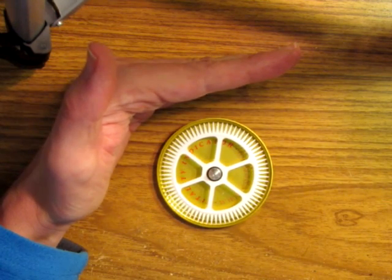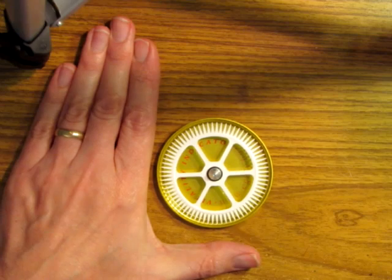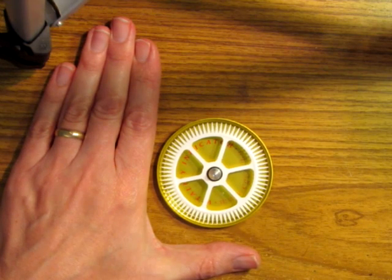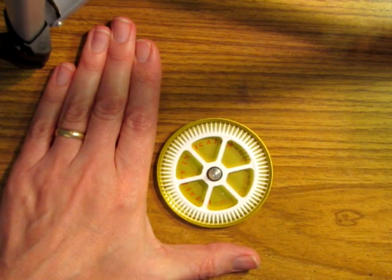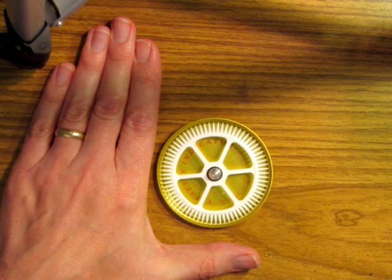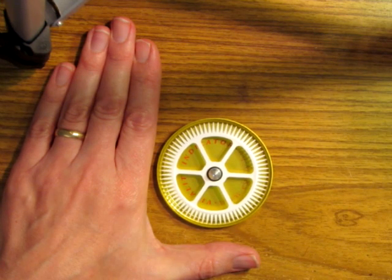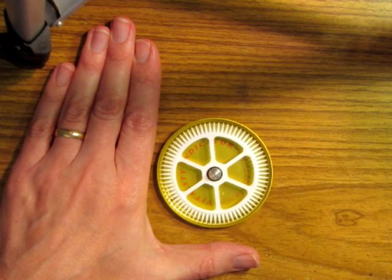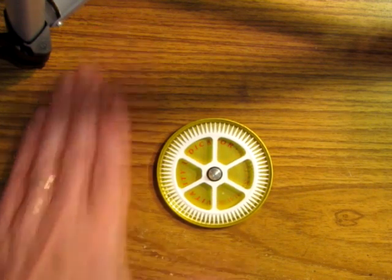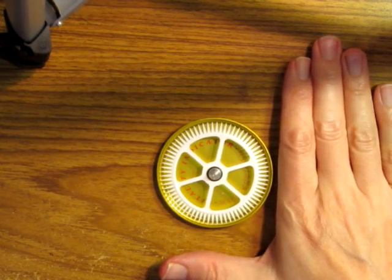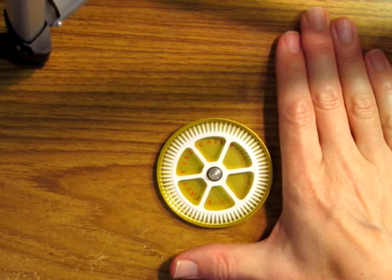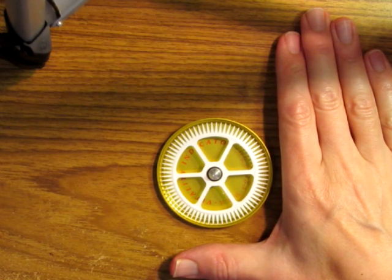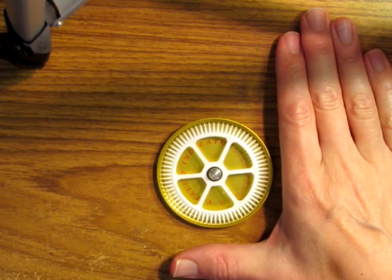In the next test I placed my left hand flat on the table next to the wheel rather than vertically. I then placed my right hand flat on the table and this also caused the wheel to rotate slowly.